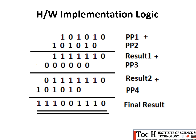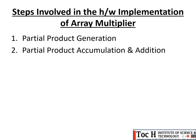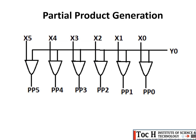The steps involved in the hardware implementation of the array multiplier are: partial product generation and partial product accumulation and addition. For the first step — partial product generation — to realize a partial product, we need to multiply the first bit of the multiplier with the entire multiplicand. Here x0, x1, x2, x3, x4, x5 represent the multiplicand bits and y0 represents the first bit of the multiplier. Multiplication can be realized using an AND gate because multiplication is simply the AND logic function.